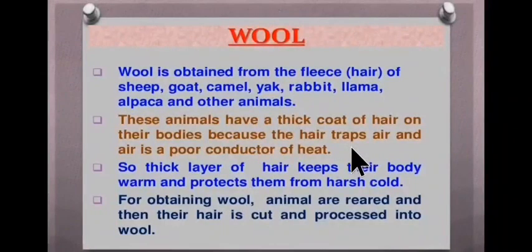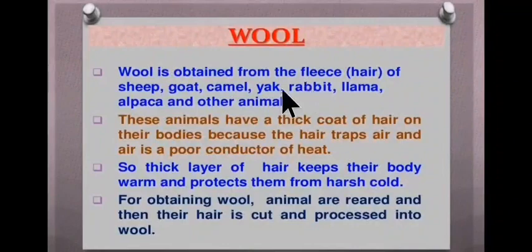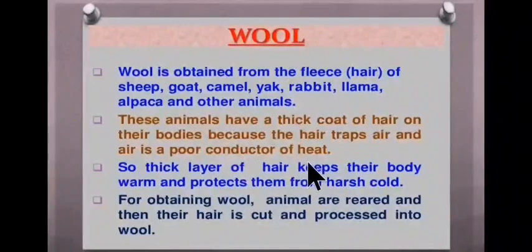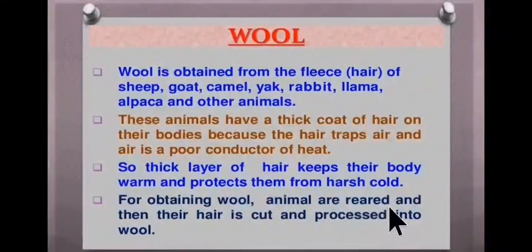Wool is obtained from the fleece. Fleece is the thick hair present on the body of these animals. These animals have a thick coat of hair because the hair traps air, and air is a poor conductor of heat. So the thick layer of hair keeps their body warm and protects them from harsh cold. For obtaining wool, animals are reared and then their hair is cut and processed into wool.